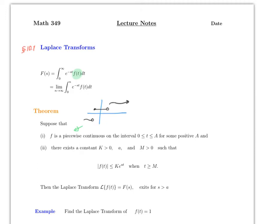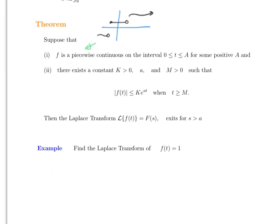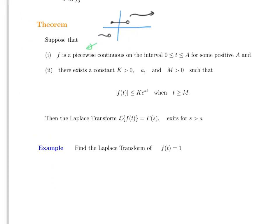The notation is very important. The function you're transforming is f(t), so the Laplace transform is denoted in a few equivalent ways. The book uses L, and either notation is fine — you can also write L{f(t)}. All of these represent the same thing.